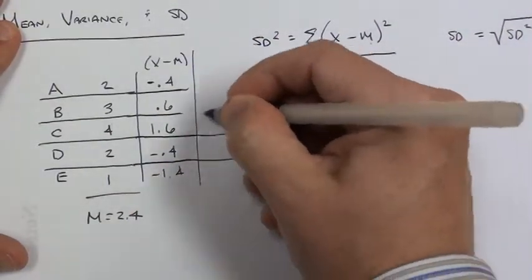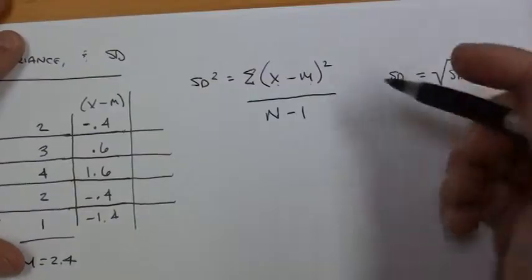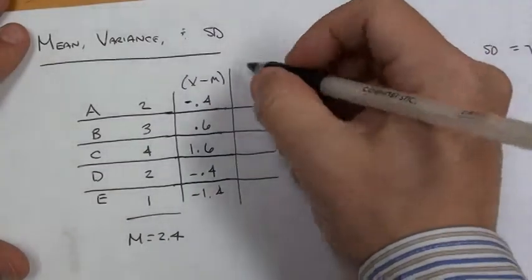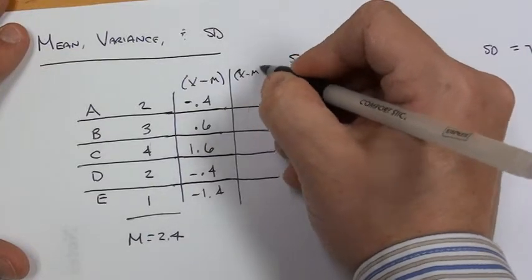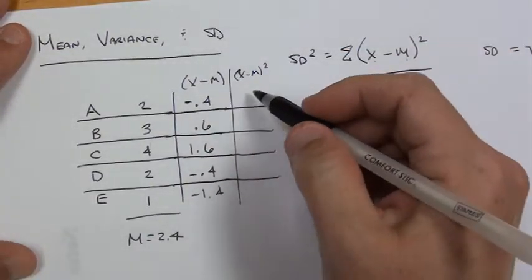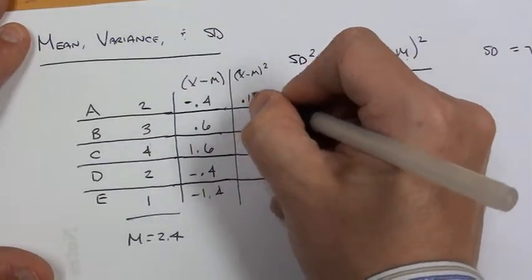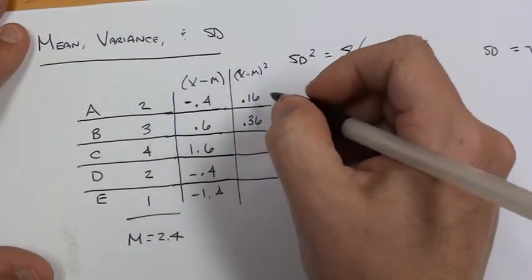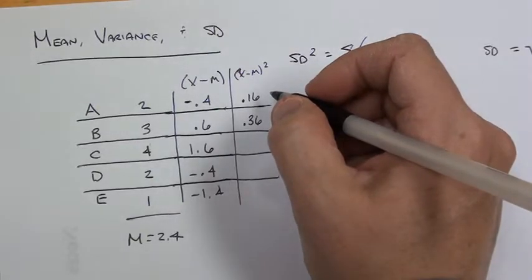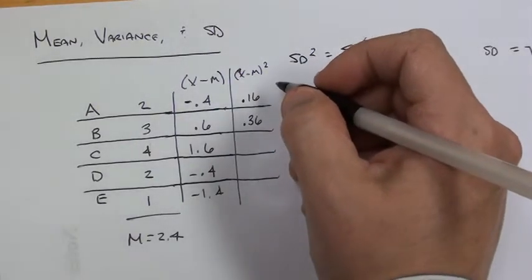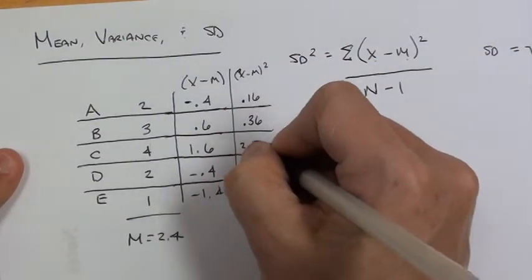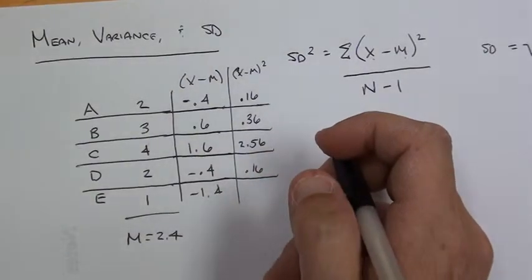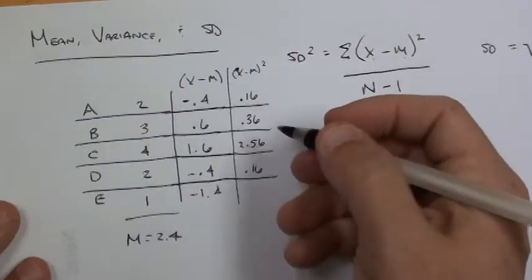Now the next column, based on this formula, we've got our x minus m and we need to square each individual deviation from the mean. So we've got an x minus m squared column. We're going to square these: 0.4 times 0.4 is 0.16. 0.6 times 0.6 is 0.36. 1.6 times 1.6 — I'll use a calculator on this — 2.56. We know that negative 0.4 squared is 0.16. And negative 1.4 squared is 1.96.